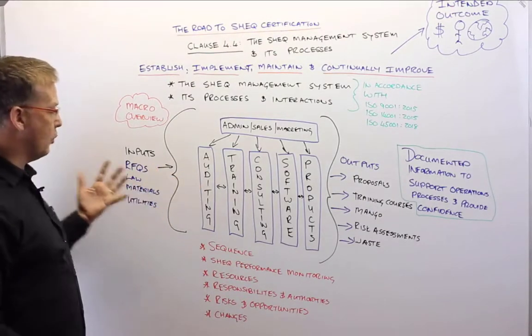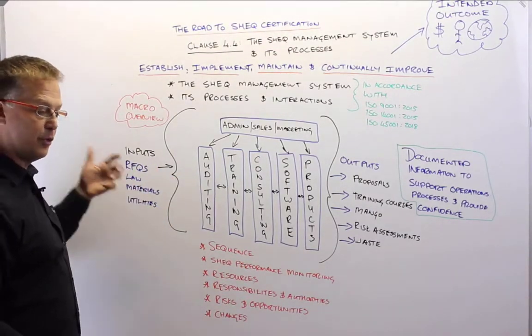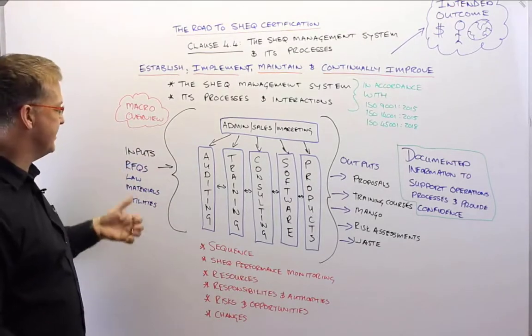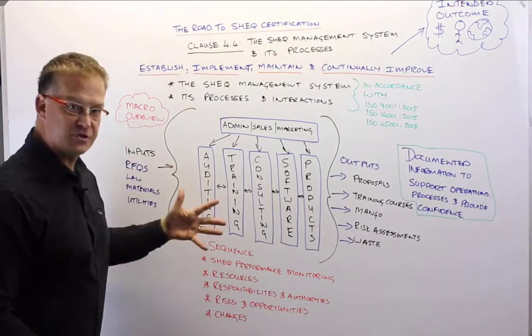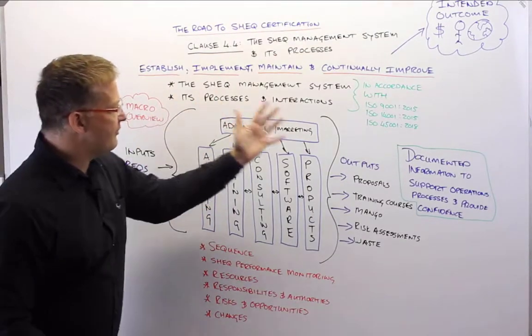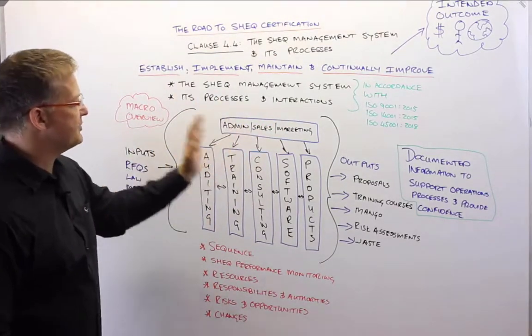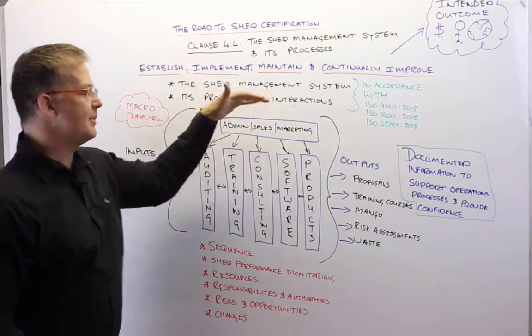So what are the various different products, services, activities, materials, documents, information? What are all the inputs into the organization, and what are the various different activities and processes? You can see we've got the inputs they come into admin, sales and marketing.